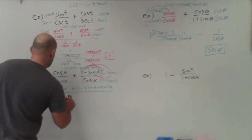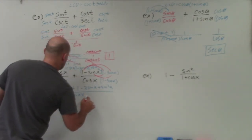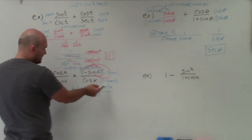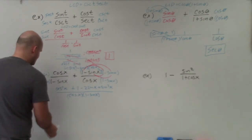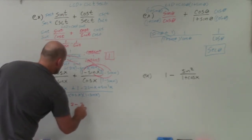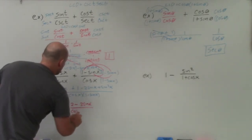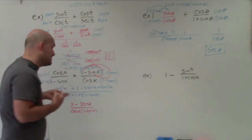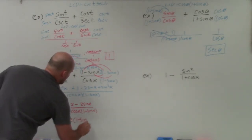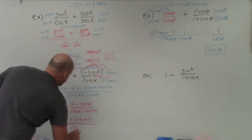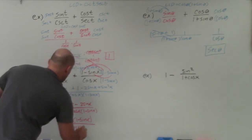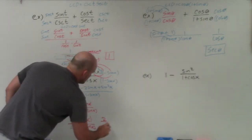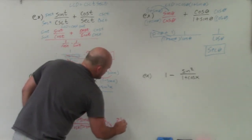That's all over cosine of x times 1 minus sine of x. Cosine squared of x plus sine squared of x equals 1 by our Pythagorean identity. Adding that 1 to the other 1 gives 2 minus 2 sine of x over cosine of x times 1 minus sine of x. Factoring out a 2 from the numerator gives 2 times 1 minus sine of x. The 1 minus sine of x cancels, leaving 2 over cosine of x, which we rewrite as 2 times secant of x.